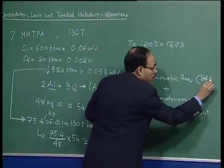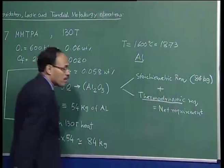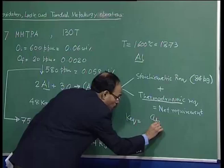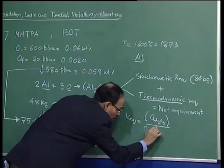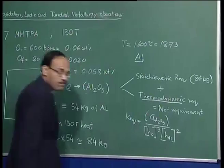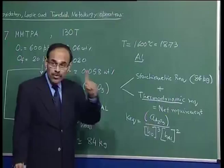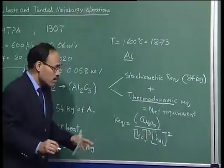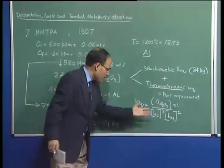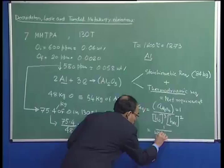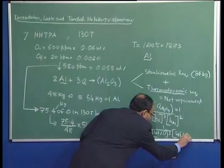The thermodynamic requirement is found by considering the equilibrium of the reaction. The equilibrium constant K is the activity of Al₂O₃ divided by the activity of oxygen cubed times the activity of aluminum squared. We assume the activity of Al₂O₃ equals 1, and approximate Henrian activity using weight percent, so K equals one over (weight percent oxygen)³ × (weight percent aluminum)².